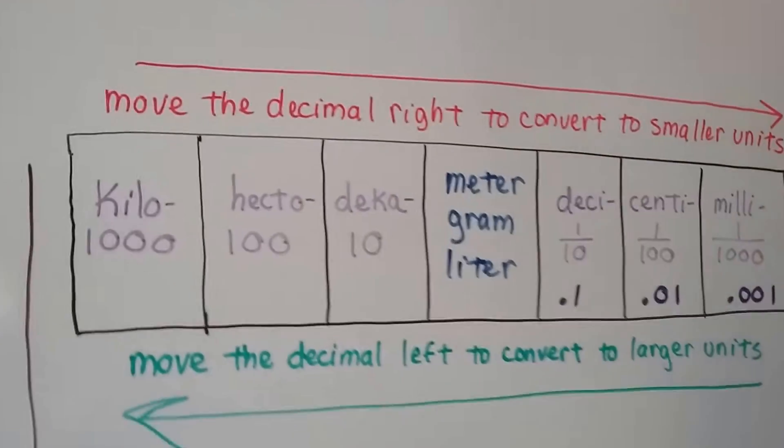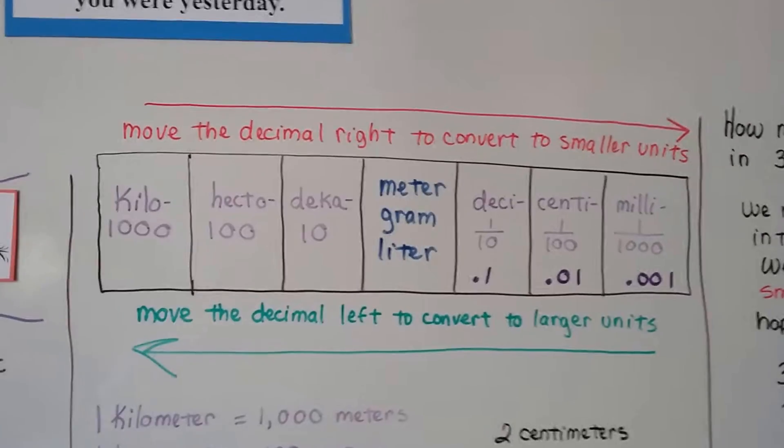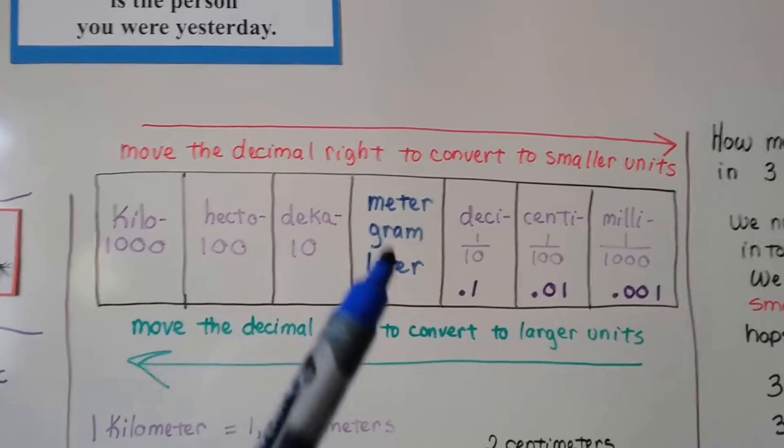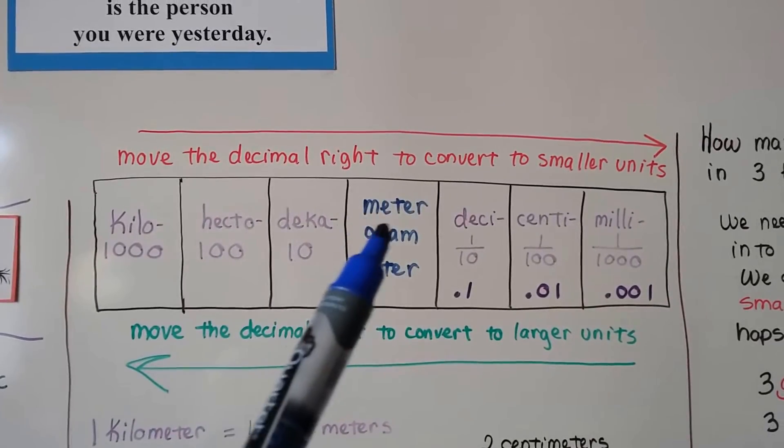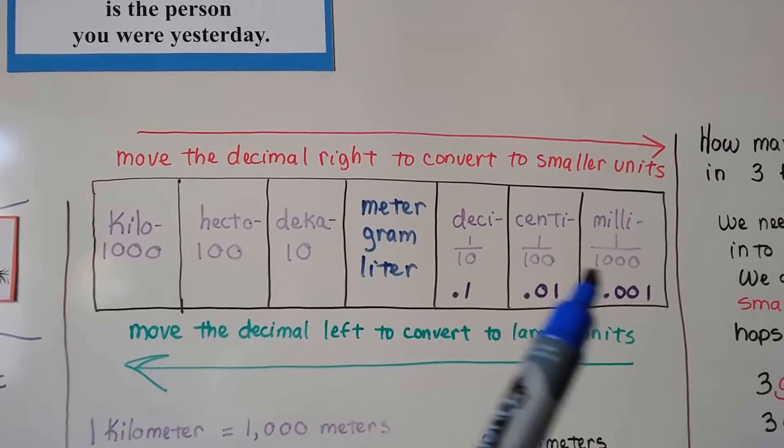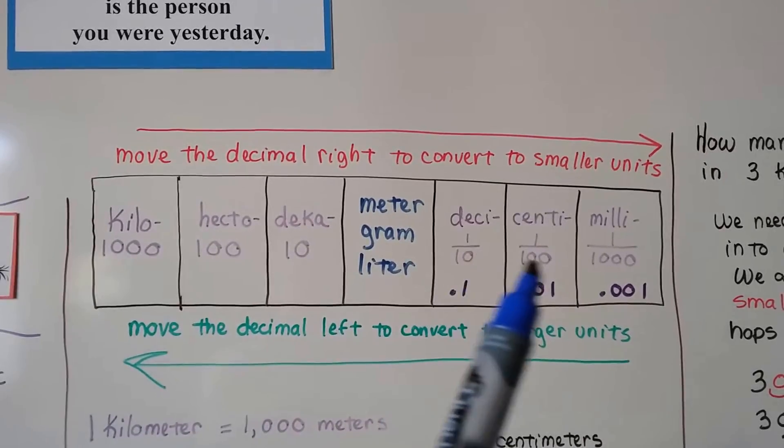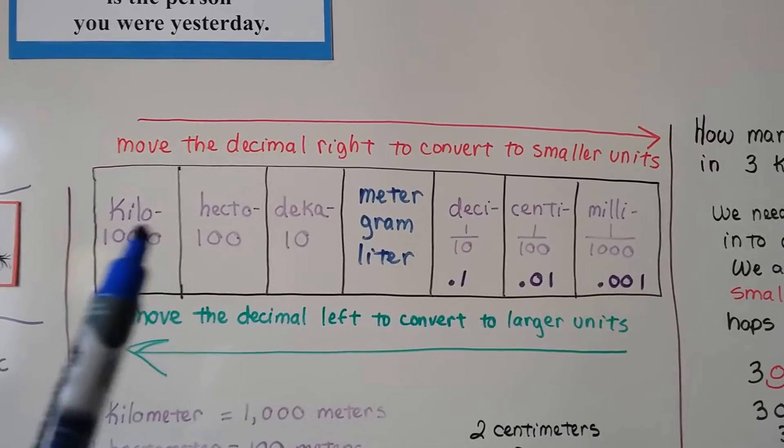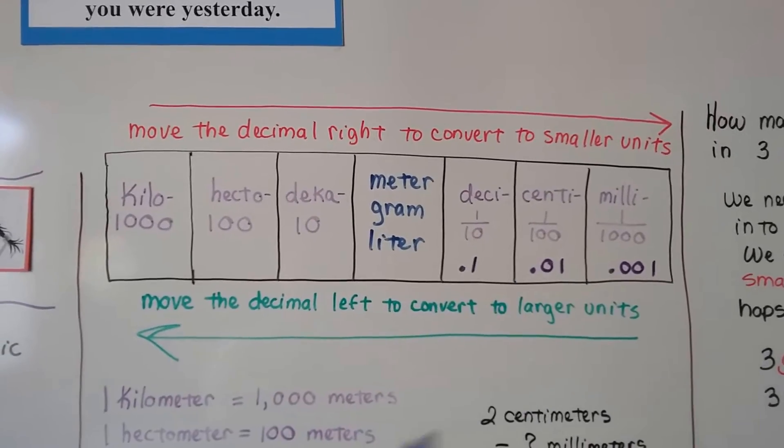So here's a chart, looks just like the one in your book, and you can see here we've got the prefixes. Here's the three base words, meter, gram, or liter, and then here's the smaller units. So this is smaller than a meter, gram, or liter. This is larger than a meter, gram, or liter. These are the prefixes.